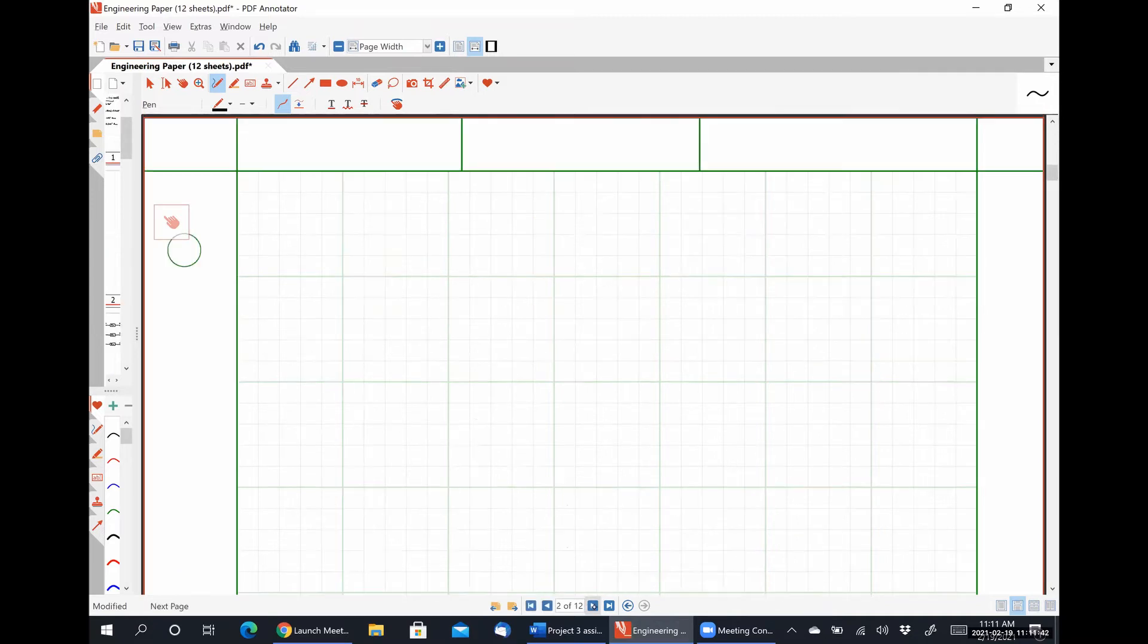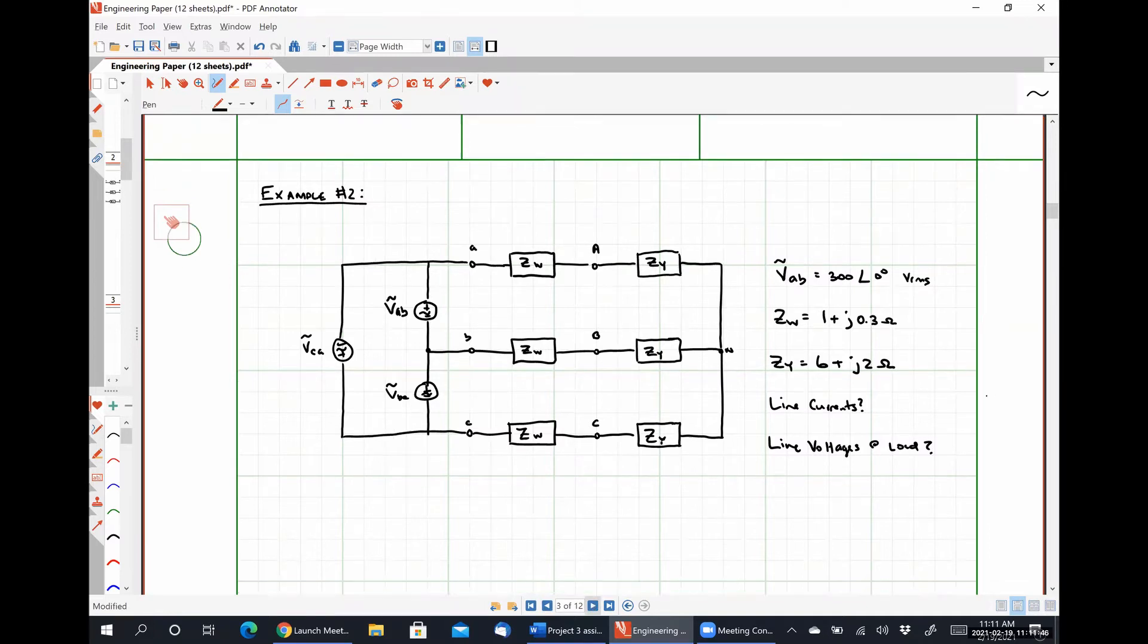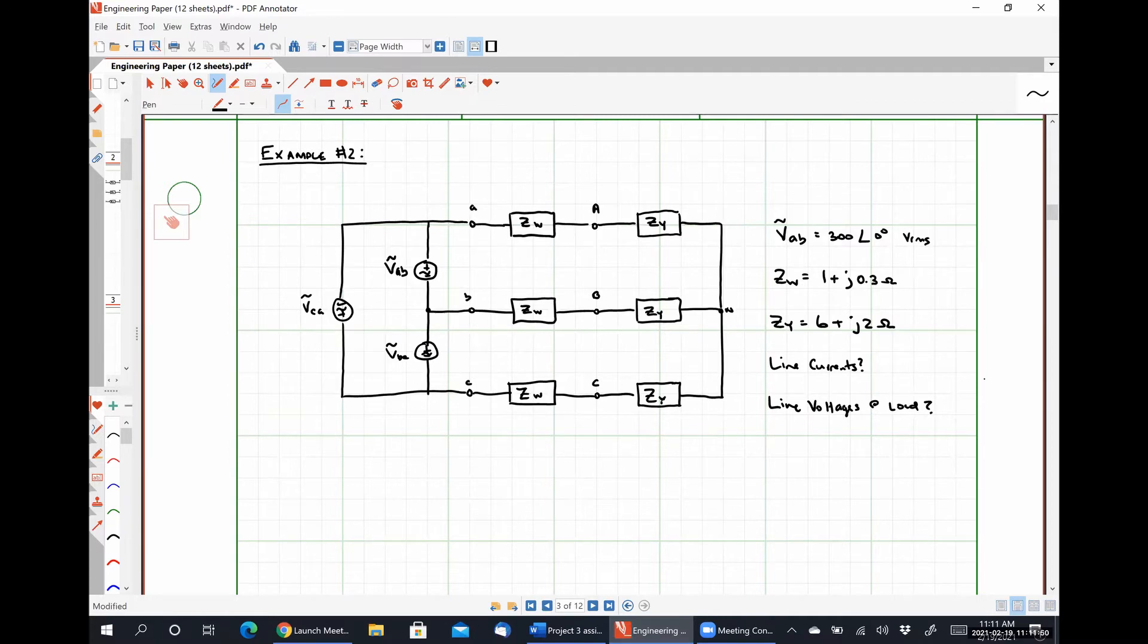So let's take a look at another example problem. I only have three prepared. We might get out of here a little bit early today. So what kind of system is this? Delta y. Delta y. Yeah. So delta connected source, Y connected load. We are asked to find our line currents. So I'll go ahead and label those guys again. And we're also asked to find our line voltages at the load. So it's going to be this guy, this guy, and this guy.